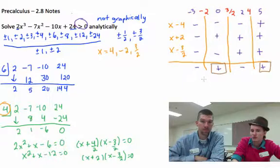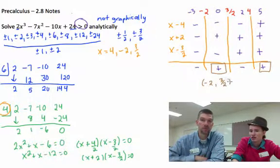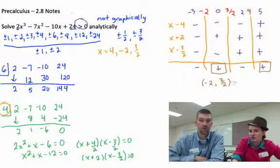So that's this interval and this interval. In interval notation, the first interval where it's positive is negative 2 to 3 halves, together with 4 to infinity.